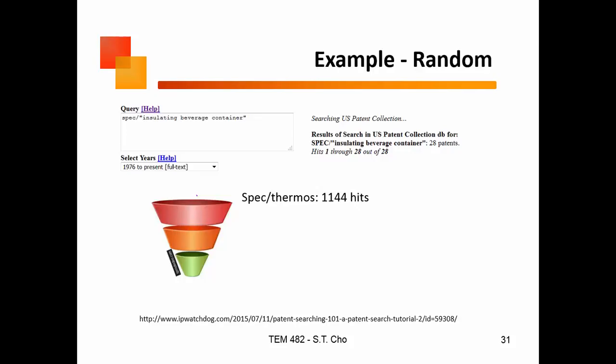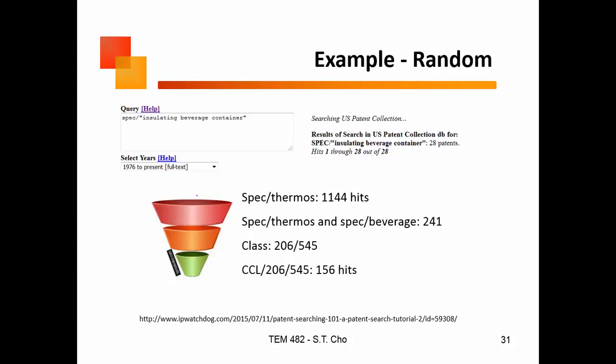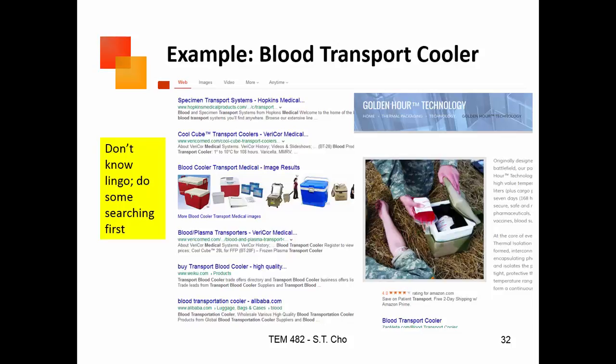I can get 20 or 28 hits right away, but I need more than that. If I look at 'thermos,' which is what an insulating beverage container is, I get a thousand results. The thing about those patents is they lead me to a product class, and based on that product class I can narrow it down further. Then I can put the two together and come up with about 55 hits, which is very manageable.